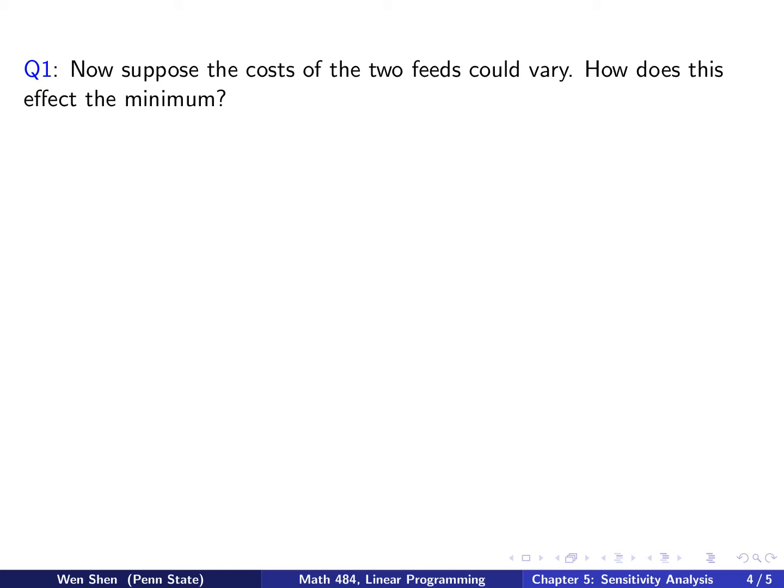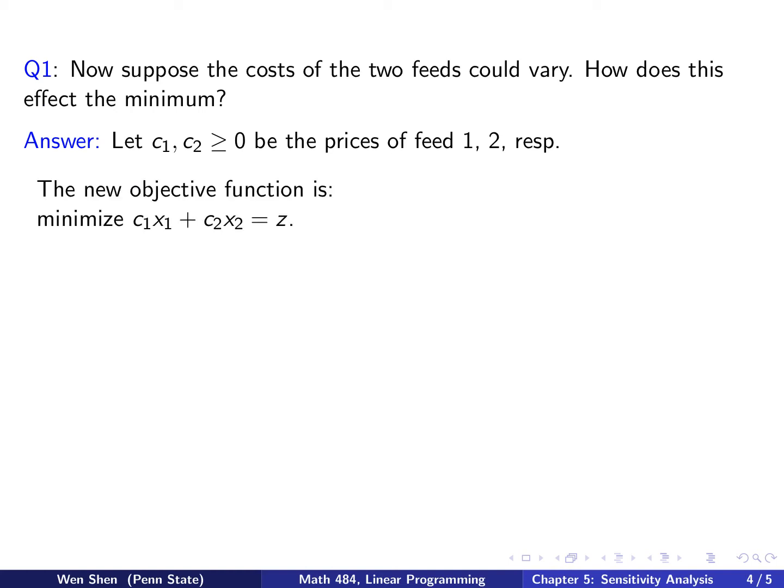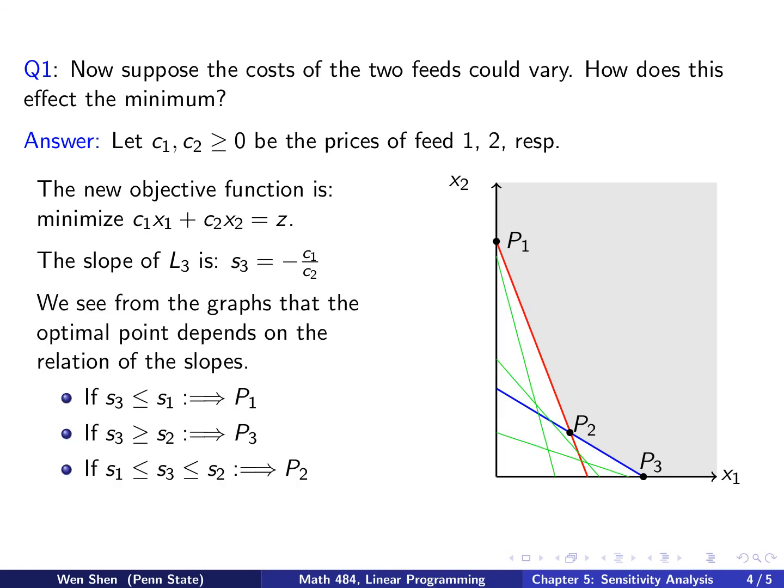First question: Now let's suppose the costs of the two feeds could vary. How would this affect the minimum or the solution of our problem? Let's try to analyze the situation. Let's put two letters, C1 and C2, to be the prices for feeds 1 and 2, respectively. With this, the objective function now becomes C1X1 plus C2X2, and that's what we want to minimize. Let's look at the slope for the third line, which is the above equation with the constant on the right-hand side. It will be the ratio between the two prices, so it's negative C1 over C2.